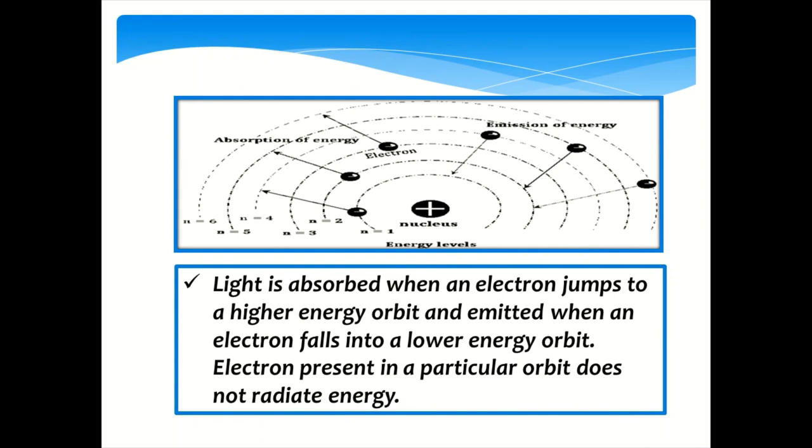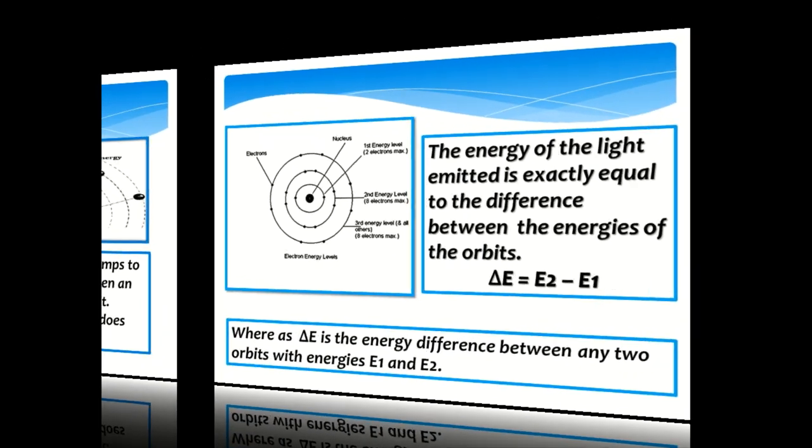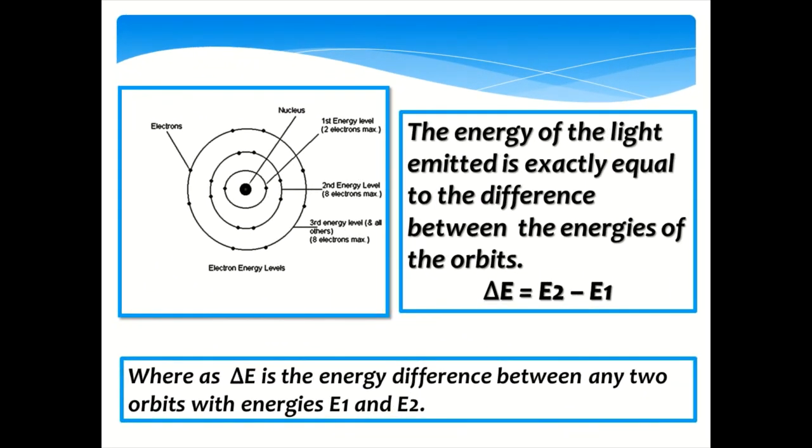The energy of the light emitted is exactly equal to the difference between the energies of the orbits. ΔE equals E2 minus E1, where ΔE is the energy difference between any two orbits with energies E1 and E2.